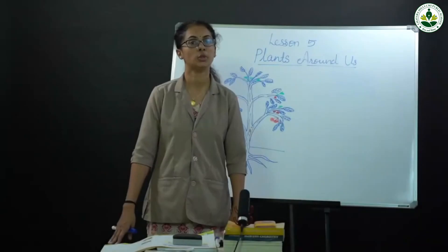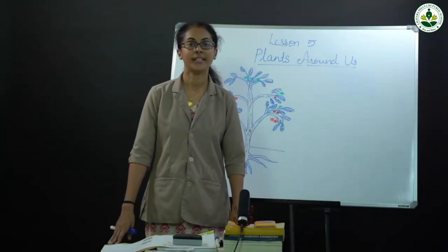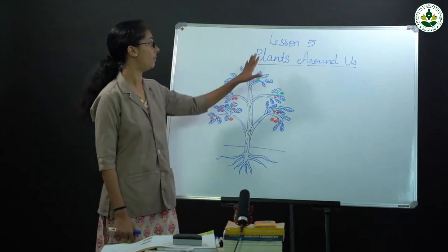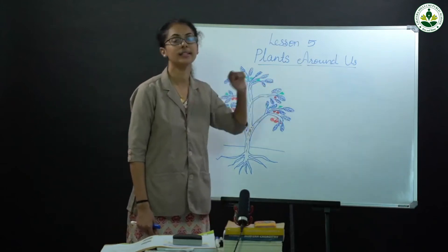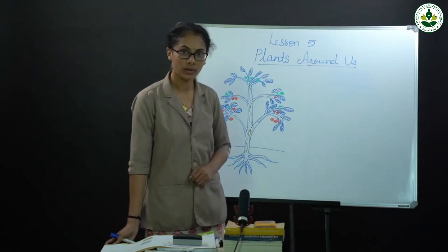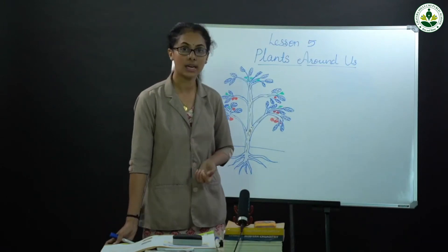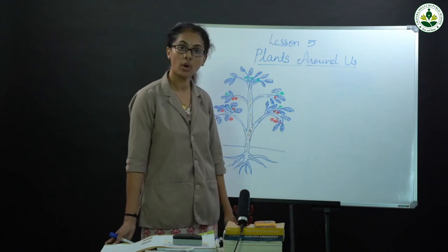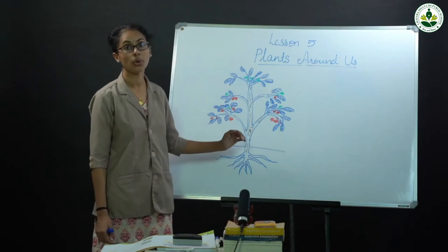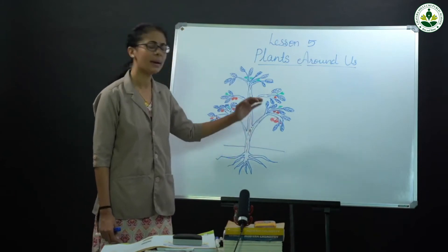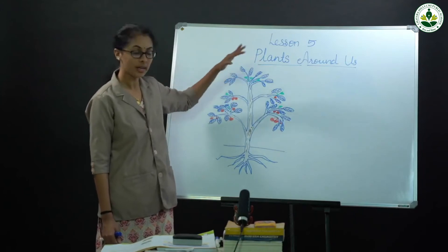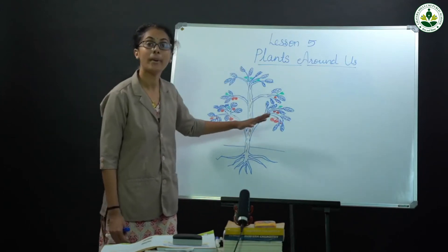Hello students, welcome to the science class. Today's portion is the shoot system — lesson number five: plants around the shoot system. The root grows below the ground, as you studied in the previous class. The shoot is the part of the plant that is above the ground.